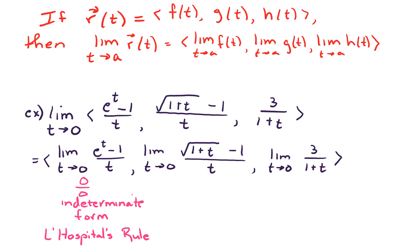Let's analyze what happens for the second component. If I put in t equals 0, we get 0 over 0 again. I'm going to need to use L'Hopital's Rule here as well. For the third component, if I put in t equals 0, I just get 3 over 1, so that's fine.